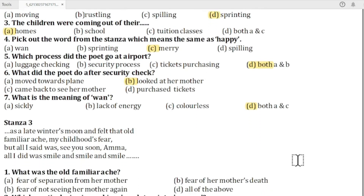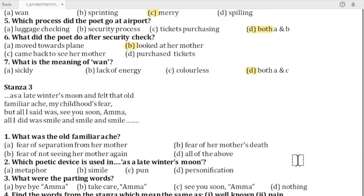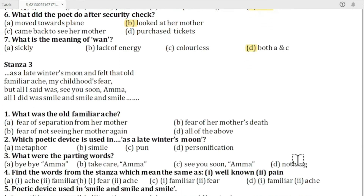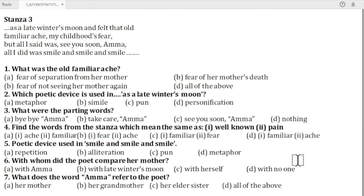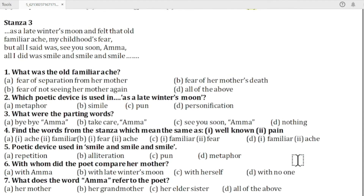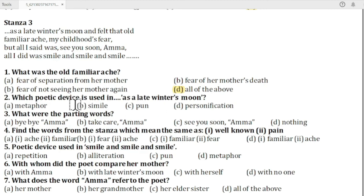Now, let's pause the video and read stanza number three. Question one from stanza three: what was the old familiar ache? The answer is D — all of the above. Question two: which poetic device is used in 'as late winter's moon'? The answer is B — simile.